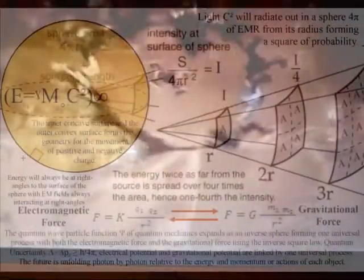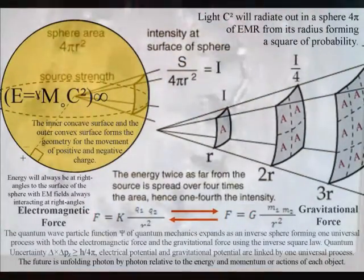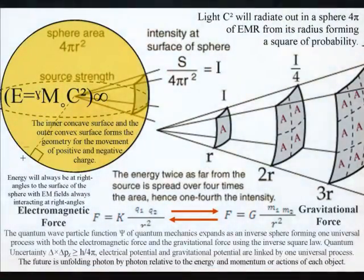This can be seen mathematically, with both electromagnetism and gravity sharing the inverse square law representing the dynamic geometry of one universal process.